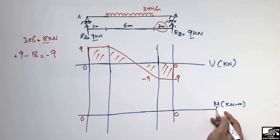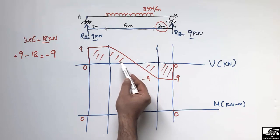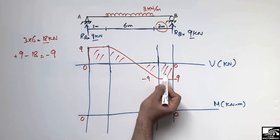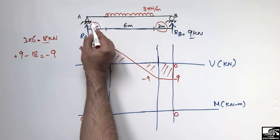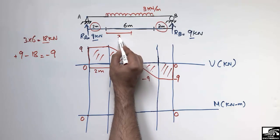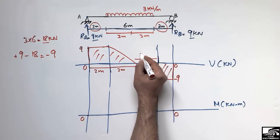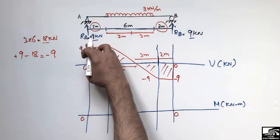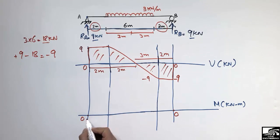To draw the bending moment diagram, we calculate the area of each section of the shear force diagram. There are four boxes: the first rectangle is 2 meters long, the second box spans 6 meters and is divided into two triangles of 3 meters each (since shear passes through zero at midspan), and the final rectangle is 2 meters long. Both supports are hinge and roller, so bending moment values are zero at both ends.